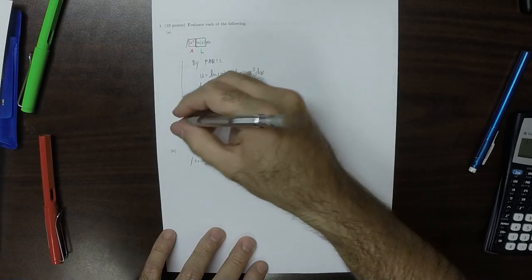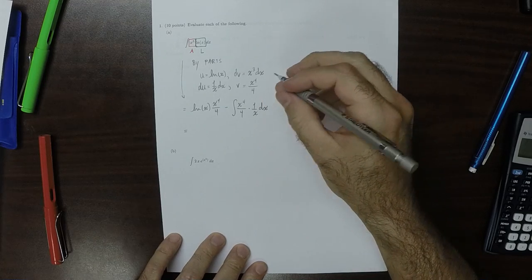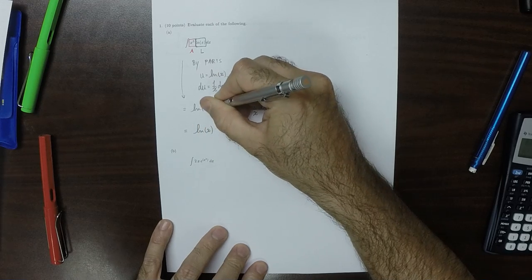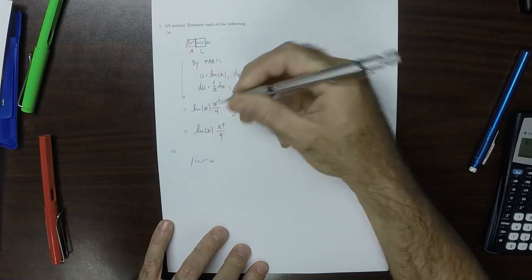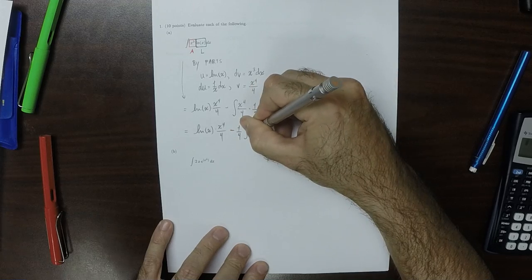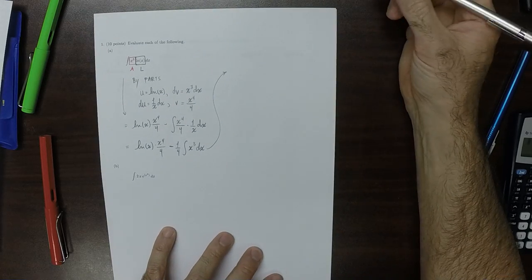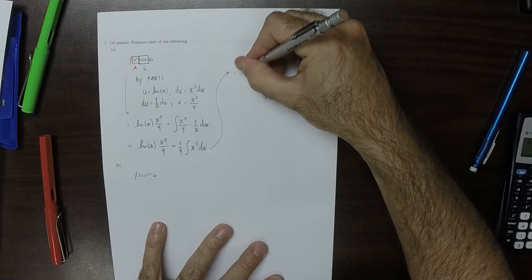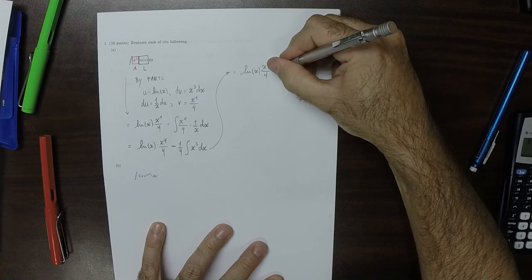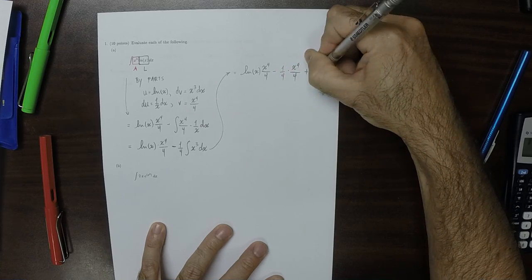And then the function being antidifferentiated can be simplified a little bit. So we get log x multiplied by x to the 4 over 4 minus one-fourth the antiderivative of x cubed dx. So log x times x to the 4 over 4 minus one-fourth times x to the 4 over 4 plus a constant.